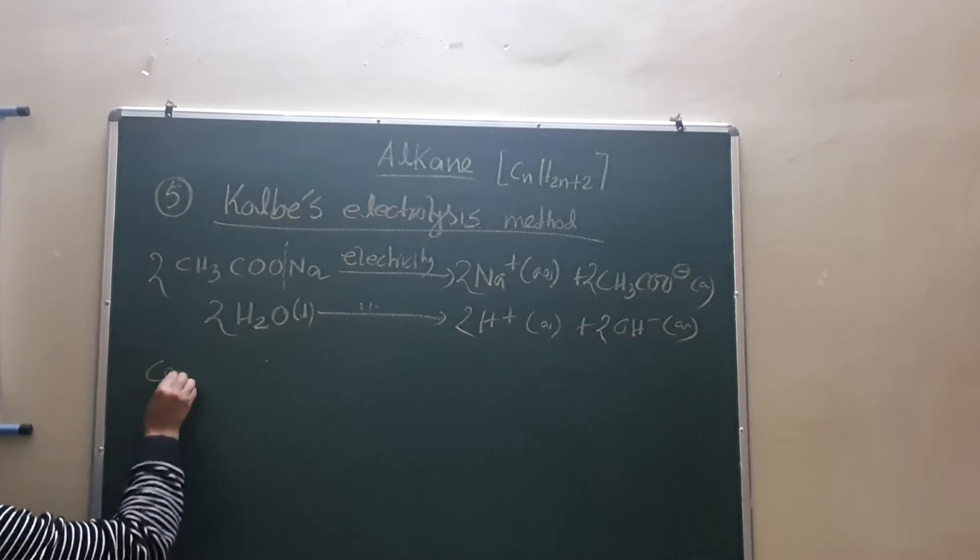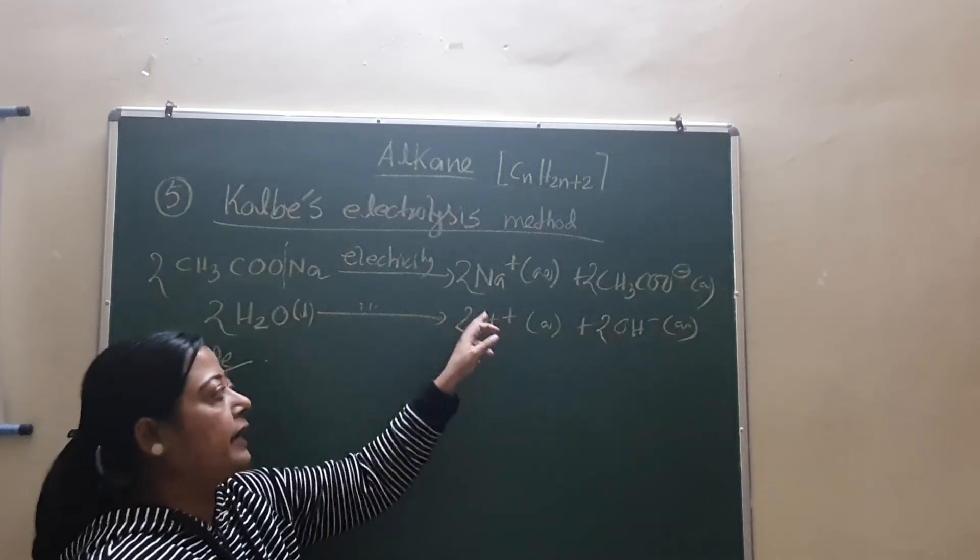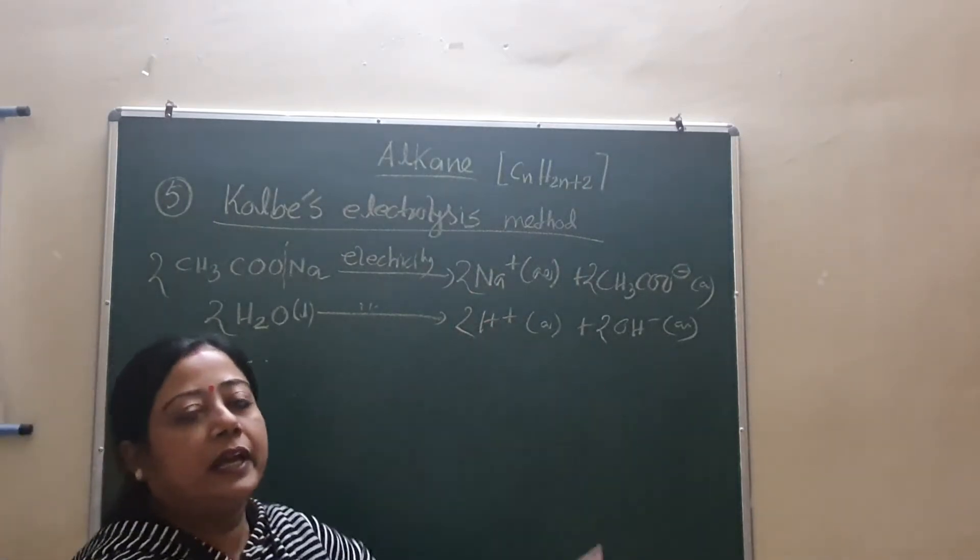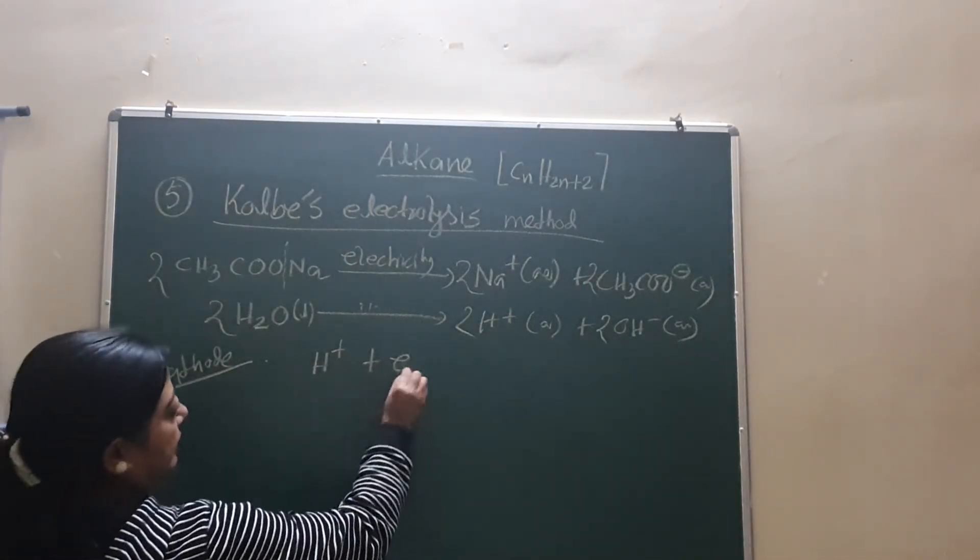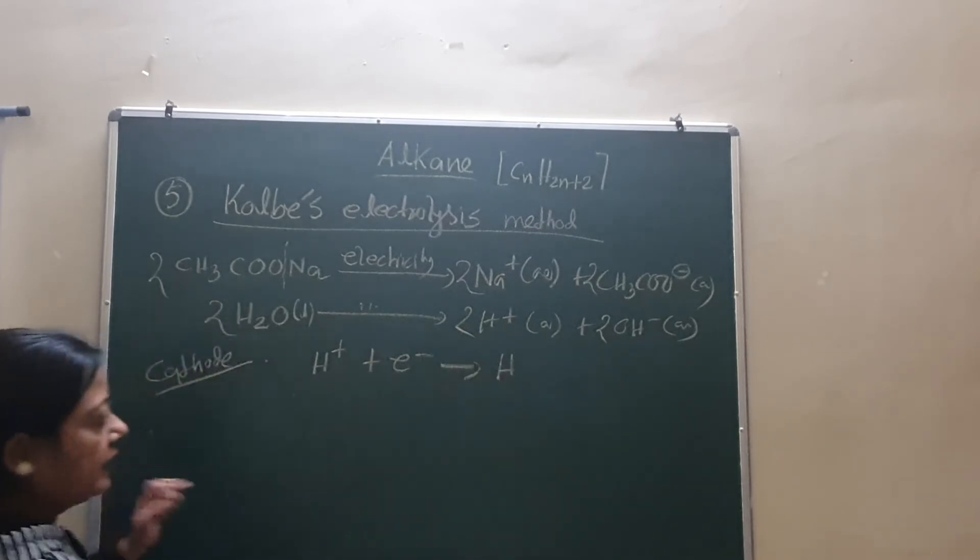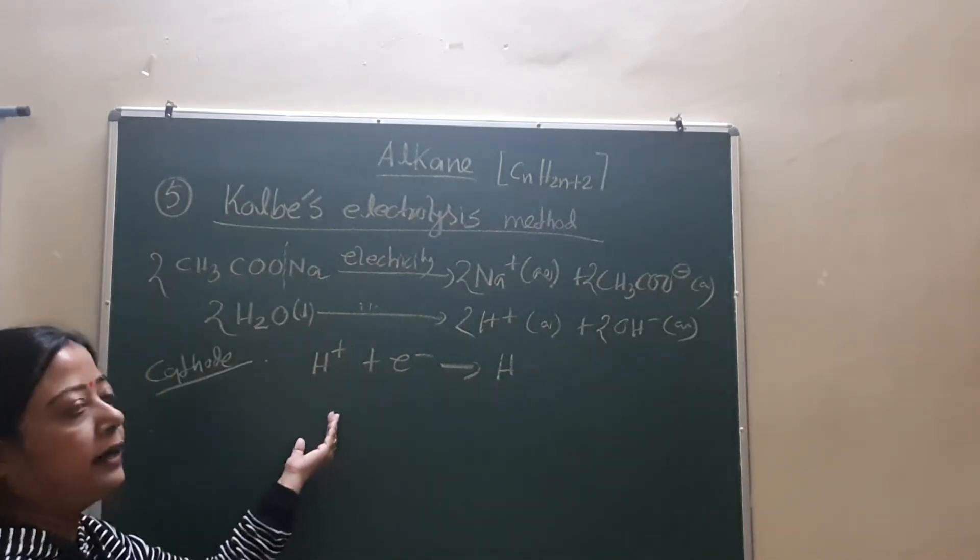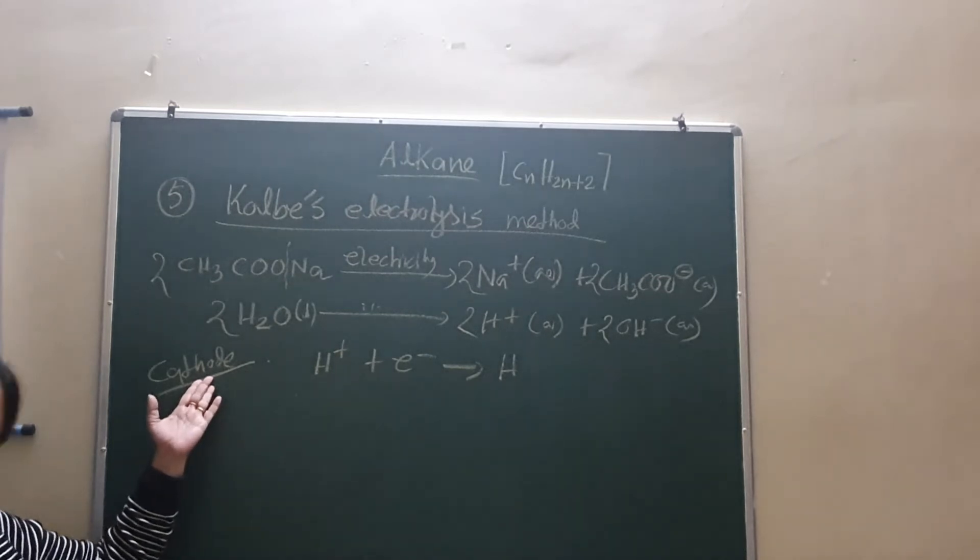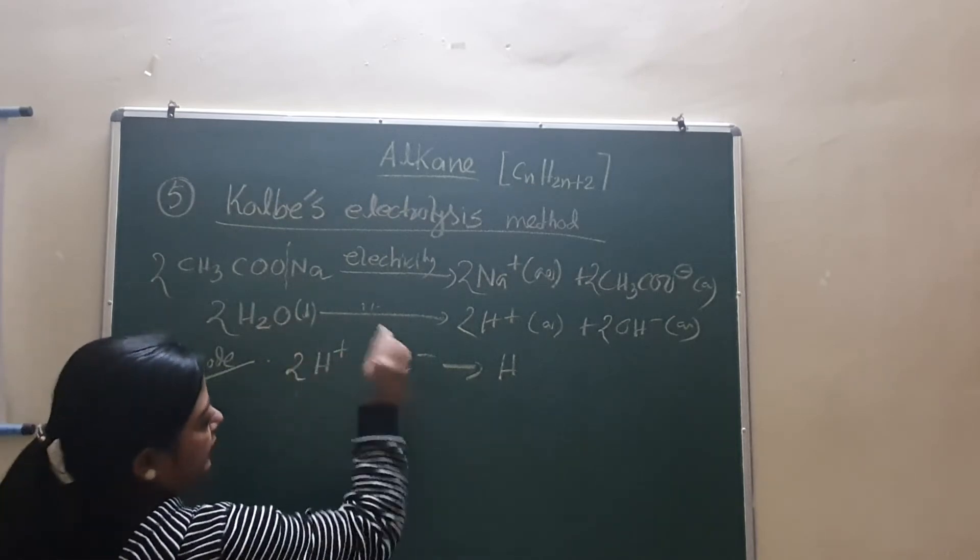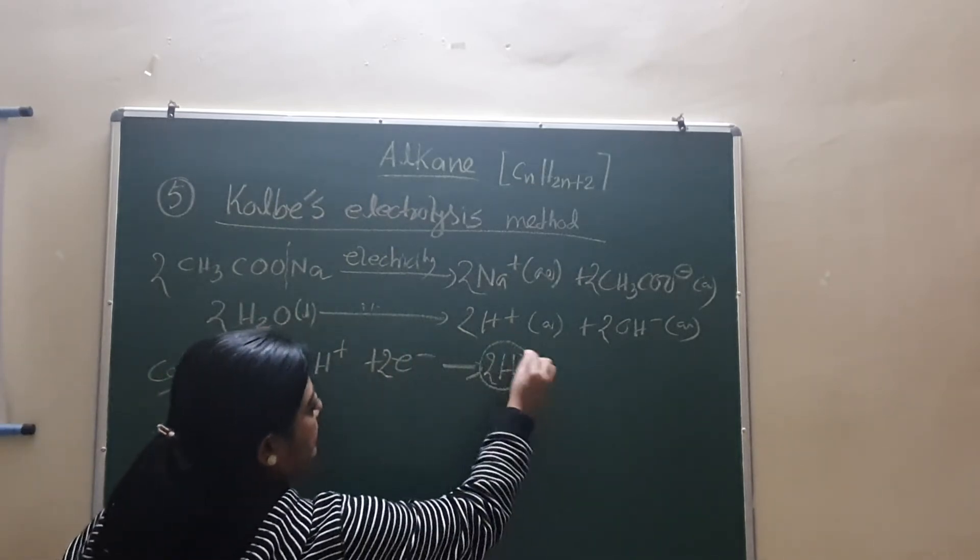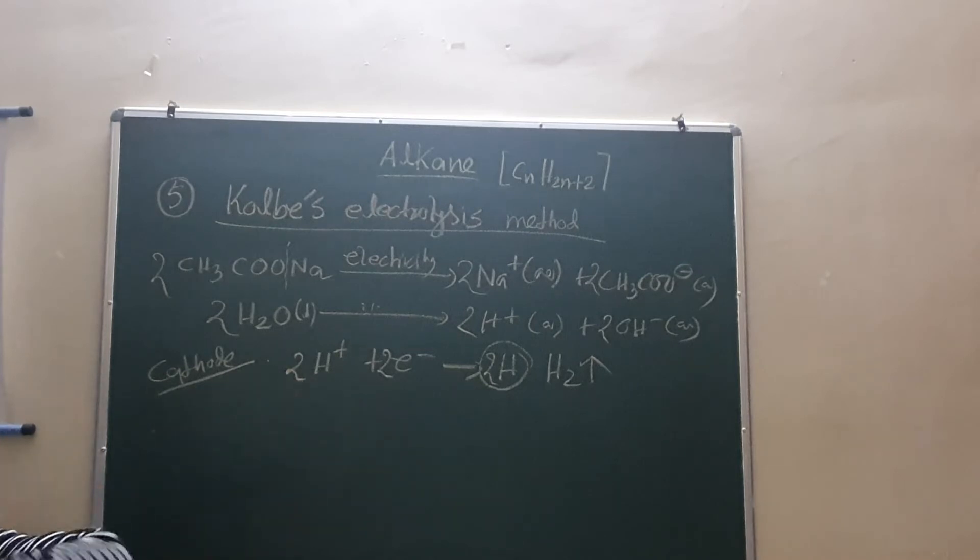Now electrolysis is happening, so cathode and anode are there. Now at cathode, who will go to cathode? Competition between the Na plus and H plus. And you know H plus is less positive than sodium, so H plus goes to the cathode. Going there what will it do? Taking one electron it will become neutral, because it has positive charge. To become neutral it accepts one electron. Electron gaining means reduction. Reduction always takes place at the cathode. Now you had 2H plus, so 2H plus accept 2 electrons forming 2H. So instead of writing 2H, we write hydrogen gas. It is deposited at the cathode. So up to this, cathode reaction is done.